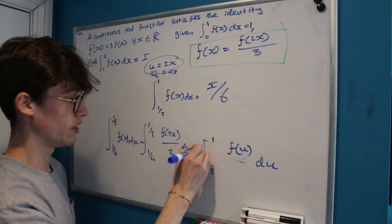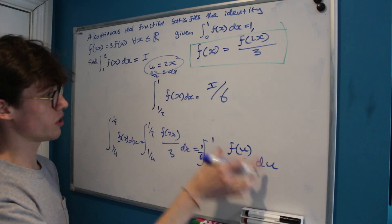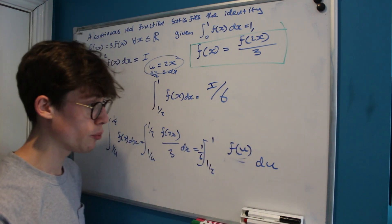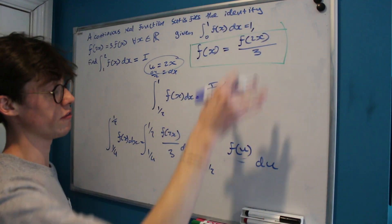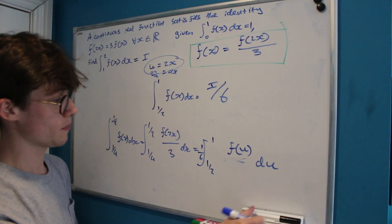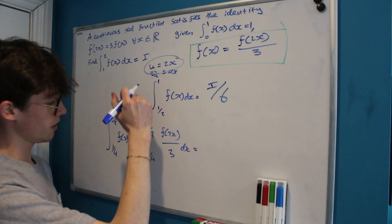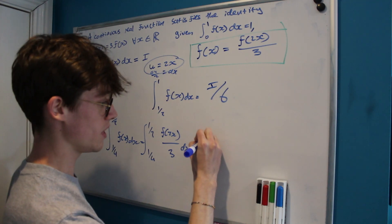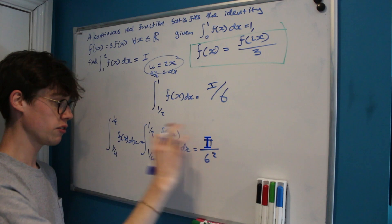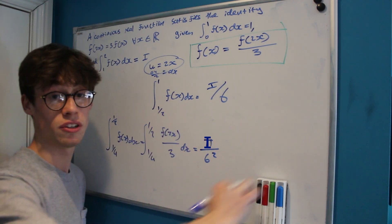And if we pull that factor of 1 sixth outside our integral, we've ended up with the question that we just looked at again, and we would continue that whole process. We would convert f(u) into f(2u) over 3 and we'd end up with another factor of 1 over 6, which means that the integral from a quarter to a half of f(x) dx is going to be equal to i over 6 squared, because we have a factor of 1 sixth when we double our bounds once and we have a factor of 1 sixth when we double our bounds again.